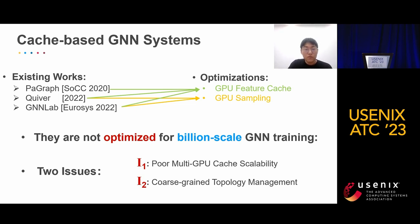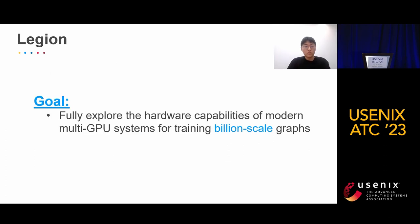There are two main issues. Firstly, when the graph reaches billion-scale, a single GPU's memory is not enough for cache. So it's natural to utilize multi-GPU memory to support a large cache space. However, existing systems' multi-GPU cache capability is poor. Secondly, existing systems' graph topology management is coarse-grained, leading to issues for sampling billion-scale graphs. In this work, we propose Legion, and the goal of Legion is to fully explore the hardware capabilities of modern multi-GPU systems for training billion-scale graphs.